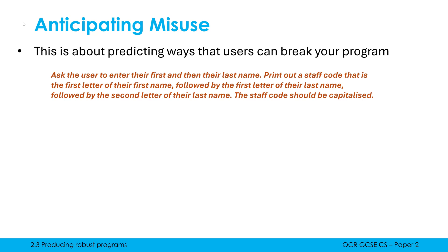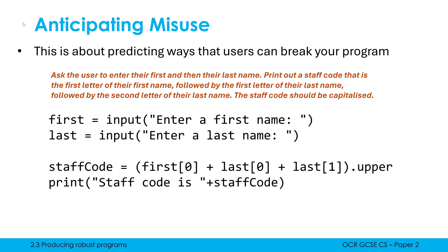We're going to print out a staff code that consists of the first letter of their first name, followed by the first letter of their last name, followed by the second letter of their last name. It takes a second to understand, and then the staff code should be capitalised when it is outputted. Let me skip ahead and show you a possible solution to this question.